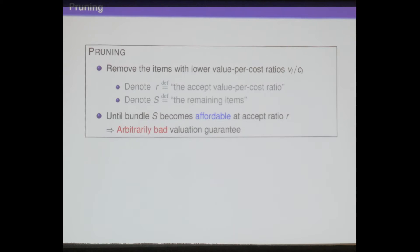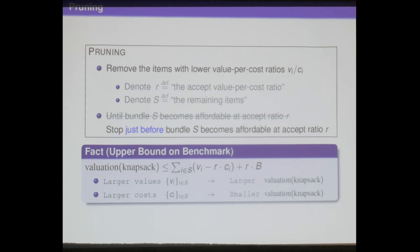Based on this example, we noticed we must modify the stop condition. The idea is quite simple: we stop the removal process one step in advance — that is, we terminate just before the remaining items become budget feasible. By choosing this stop condition, we obtain a useful upper bound on the knapsack valuation. Intuitively, if the remaining items have larger values the knapsack valuation is also large, and if the remaining items have larger costs the knapsack valuation is likely small.